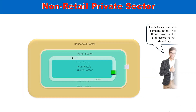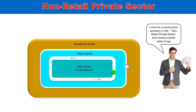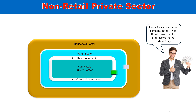The iconograph highlights the labor markets in the non-retail private sector. An employee in the construction industry is shown with his market-driven wages packet, represented by the green arrow. The non-retail sector supplies goods and services to the retail sector, households, and interacts with the external economy.